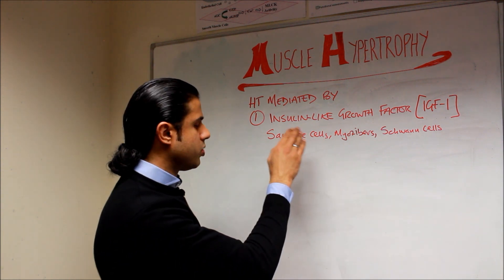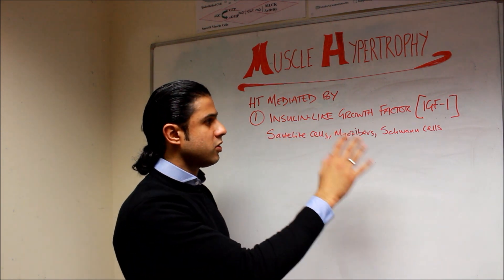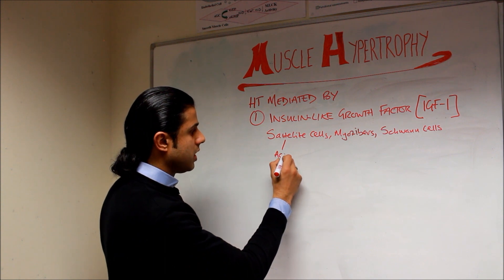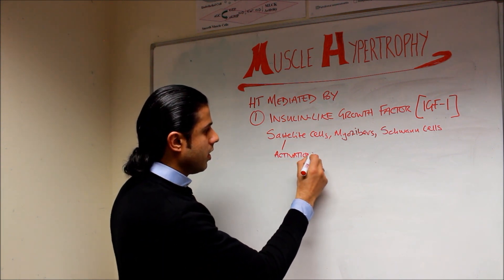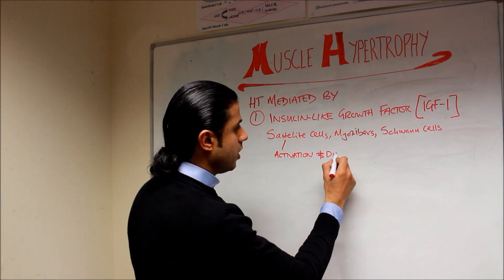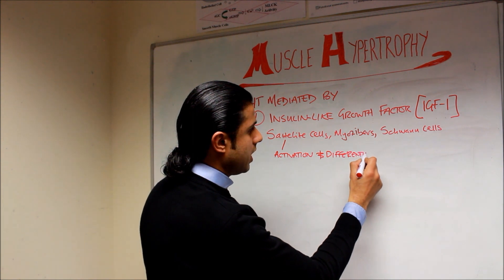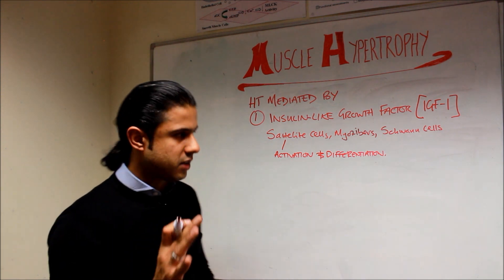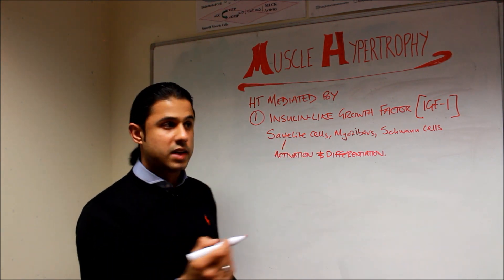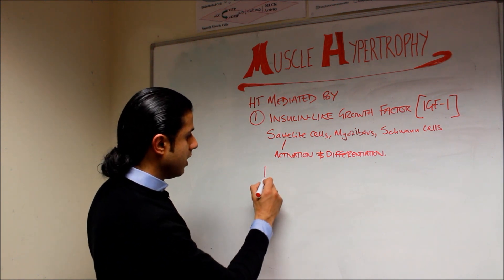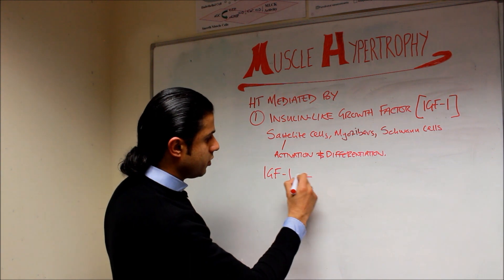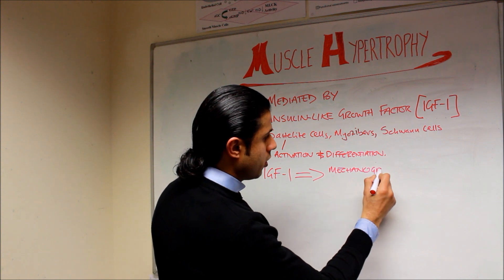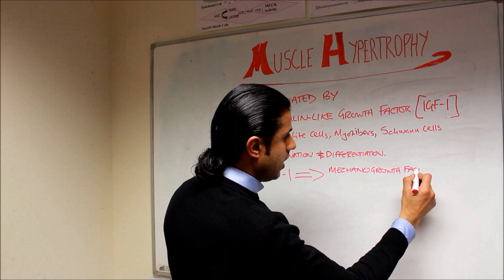IGF-1 is present in satellite cells, myofibers, and Schwann cells, and it causes the activation and differentiation of satellite cells. IGF-1 is extremely important, and once it becomes elevated and activated, IGF-1 actually converts into something called mechano growth factor, or MGF.